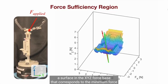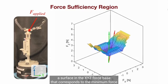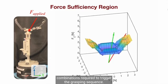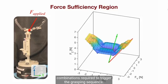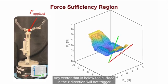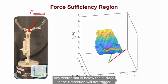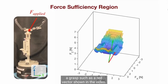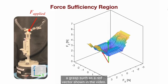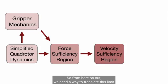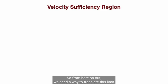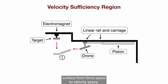A surface in the x, y, z force space that corresponds to the minimum force combinations required to trigger the grasping sequence. Any vector that is below the surface in the z-direction will not trigger a grasp, such as the red vector shown in the video. So from here on out, we need a way to translate this limit surface from force space to velocity space.